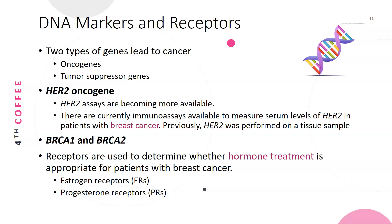The HER2 oncogene assays are becoming more widely available; immunoassays can now measure HER2 levels in patients with breast cancer, whereas previously HER2 was performed only on tissue samples. BRCA1 and BRCA2 are genes that put a woman at higher risk of breast cancer — it doesn't mean she will develop it, just a higher risk. Estrogen receptors and progesterone receptors are analyzed from biopsy samples to determine whether hormone treatment is appropriate. For example, if the cancer is estrogen receptor positive, it feeds off estrogen, so estrogen therapy would be contraindicated. These assessments are essential for properly guiding breast cancer treatment.